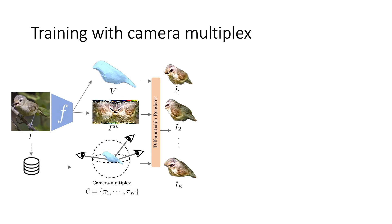Supervising each of these rendered images leads to per-camera losses, against which the camera multiplex is updated. The per-camera losses also induce a probability distribution over the cameras.